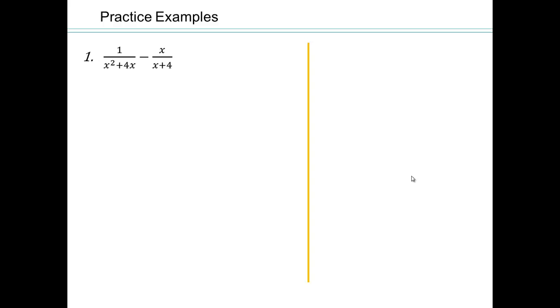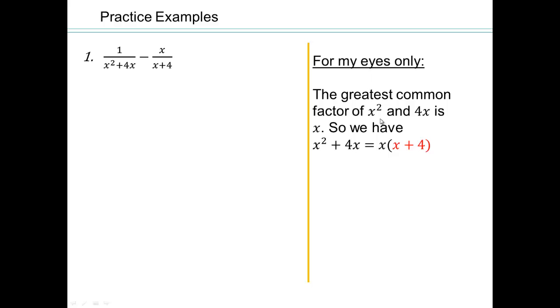All right, now we're going to look at how we can use that to do more examples of rational expressions. So now, here we are not given factored form, so you're going to have to rewrite that. So do a my eyes only column so that you can work on questions like that. So we have x squared plus 4x. What is the greatest common factor across here, which is the x, and so times x plus 4. And then here's x plus 4, so let's rewrite it.